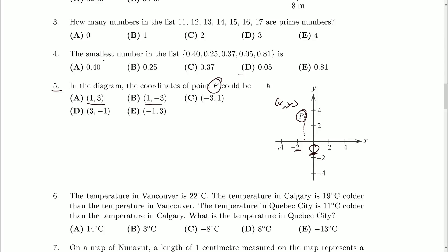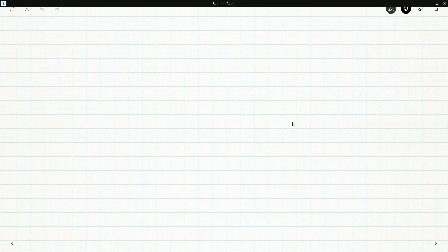So we've got (1,3), (1,-3), (-3,1), (3,-1), (-1,3). These are our possible answers. So what I think we should do is just try and narrow down the x and y-coordinates of P.